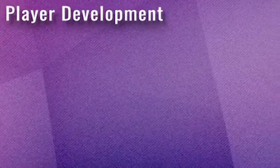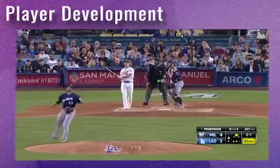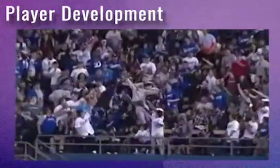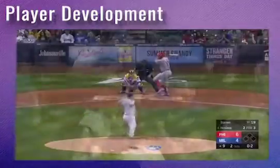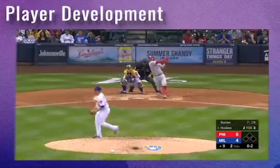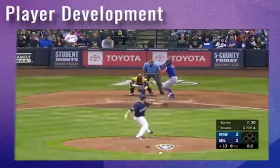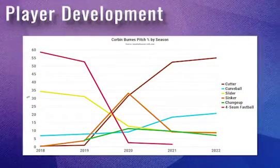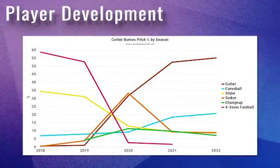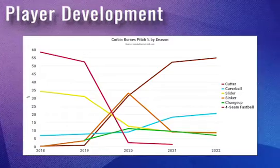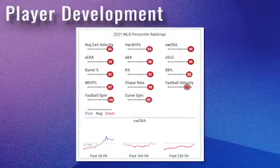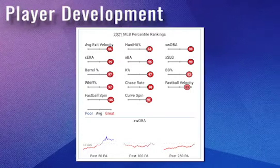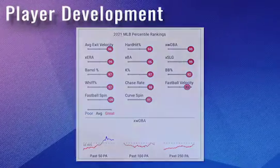A great example of StatCast data being applied with great success is pitcher Corbin Burns, who went from essentially the worst pitcher in baseball in 2019 to the best in 2021. Analysis from his 2019 season indicated an ineffective fastball that was thrown over 50% of the time. With some offseason adjustments, Burns started relying on a cutter instead, which was much more effective. An increased focus on spin rate and movement changed Burns' pitch selection and his success on the mound.